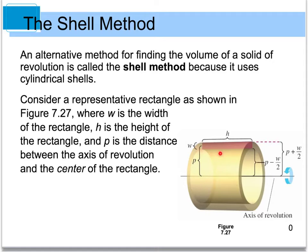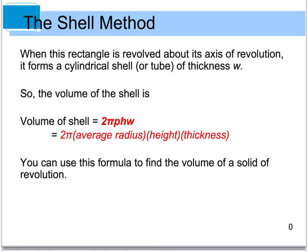If you look at the rectangle right here that has the width w and height h, we also have some distance p. p is kind of like the distance between the top and bottom of that rectangle — the center of that rectangle. If we take that rectangle and revolve it around the axis, we get a 3D image that looks like a tube or a cylindrical shell. This tube has some thickness of w.